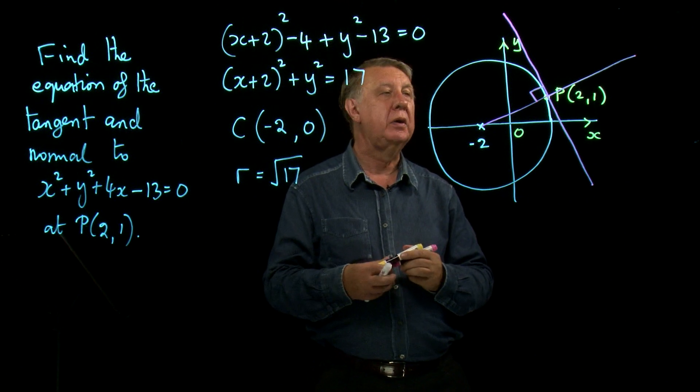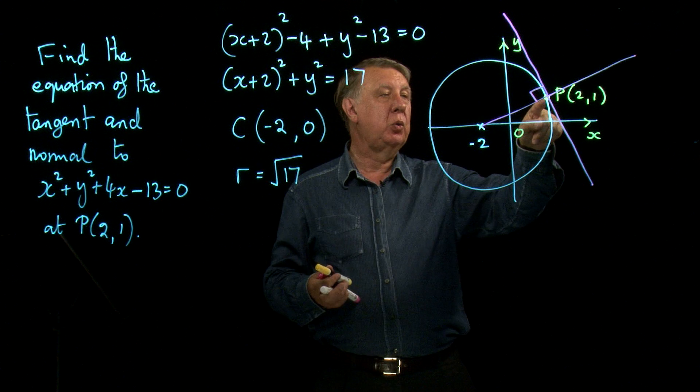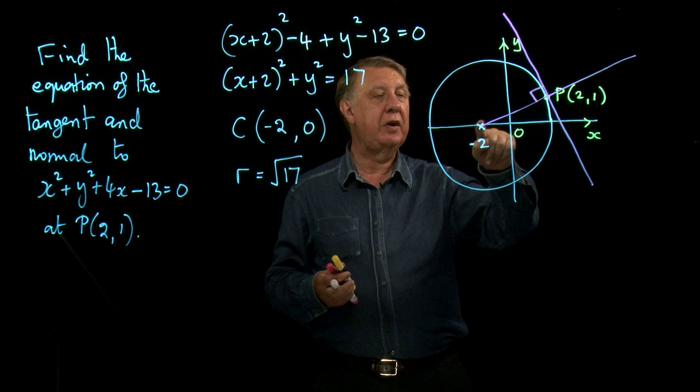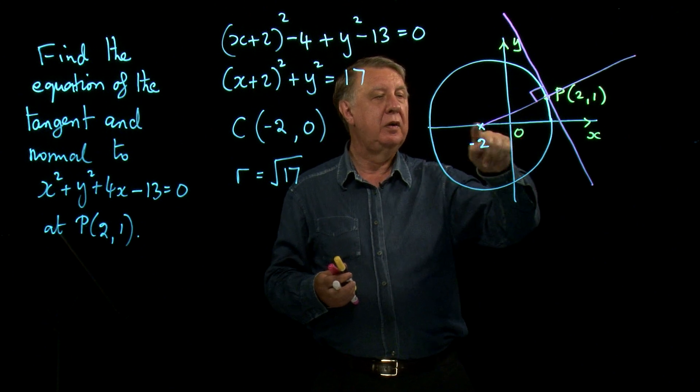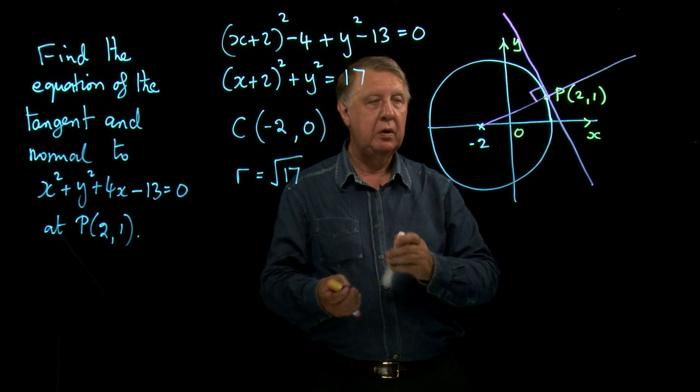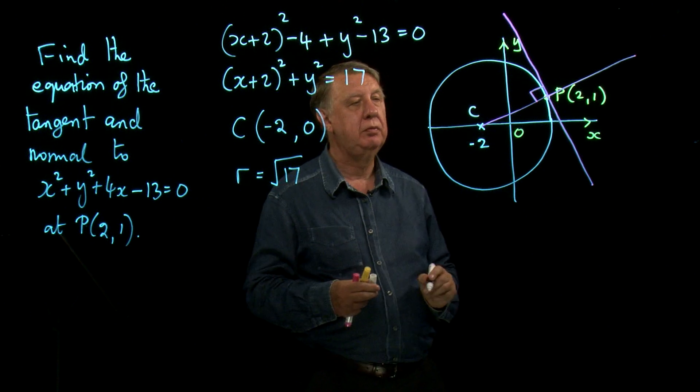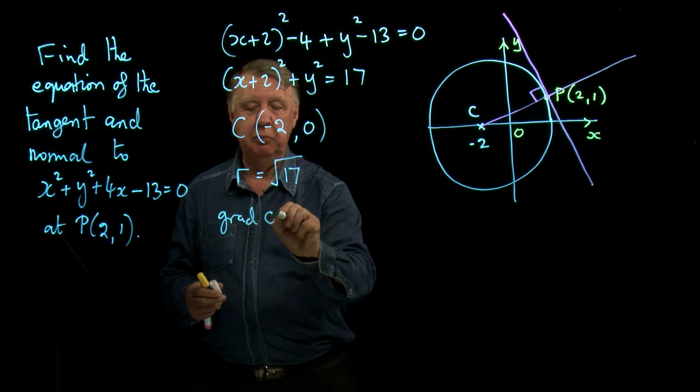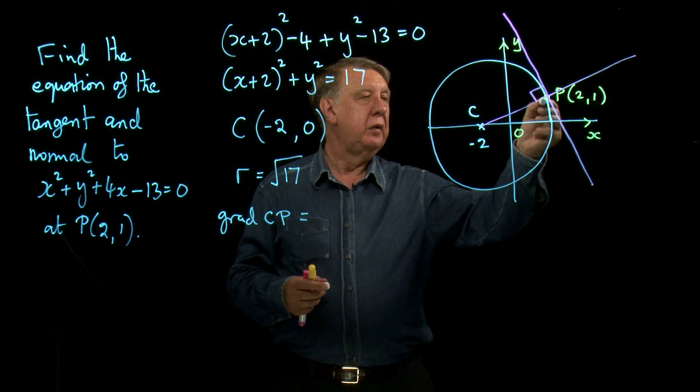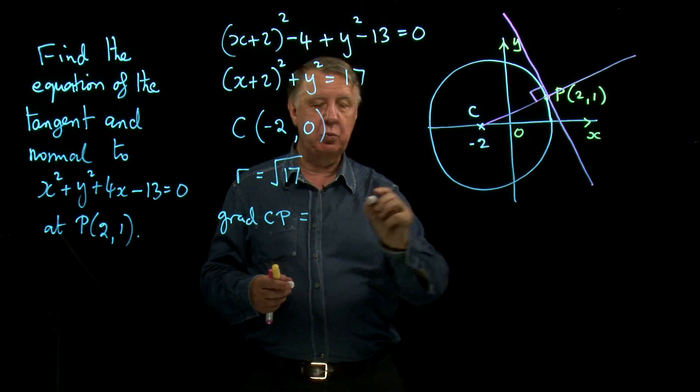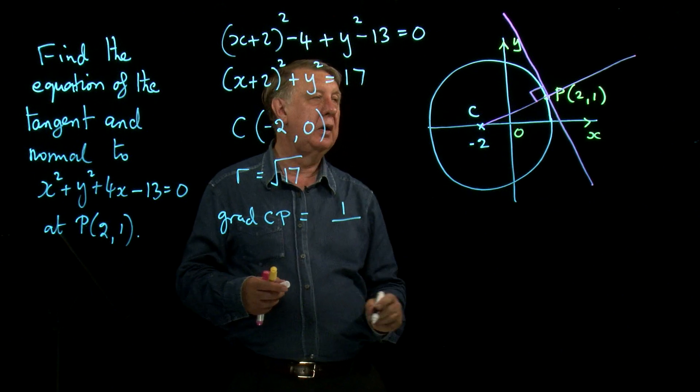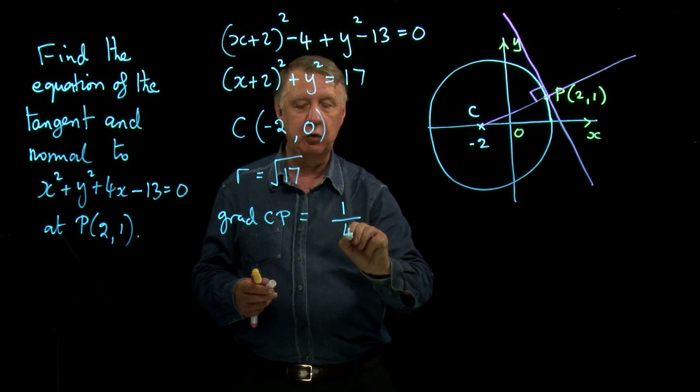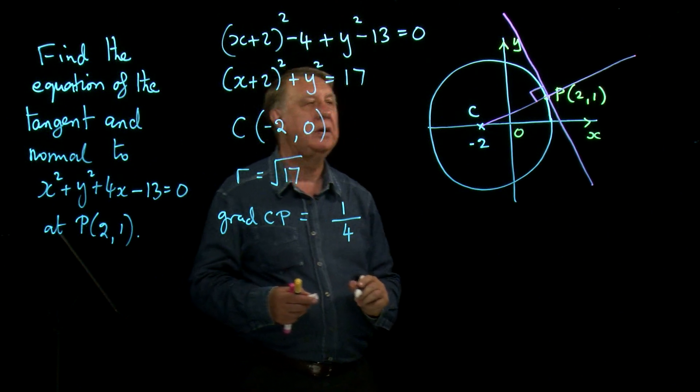So I want to find the equation of that line, the tangent and this line here. What do I know that will help me? I know the coordinates of that point. I know the coordinates of that point, so I can find the gradient of that line. So the gradient of CP is equal to the difference in the y, which is just 1, over the difference in x, which is negative 2 to 2, which is 4. So the gradient of CP is a quarter.